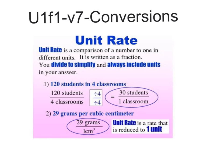Next one, 29 grams per cubic centimeter. Well, it's already a unit rate because when it says per cubic centimeter, that just means 1 cubic centimeter. So it's 29 grams over 1 centimeter cubed. Just remember, a unit rate is when the bottom number is like 1 unit.